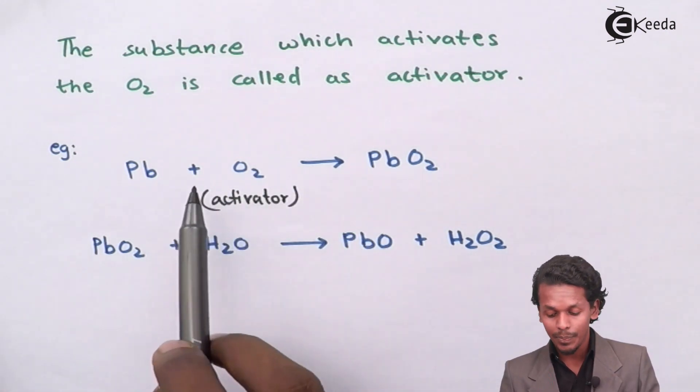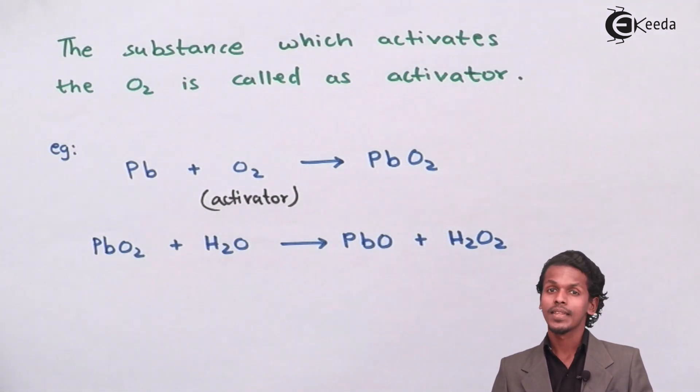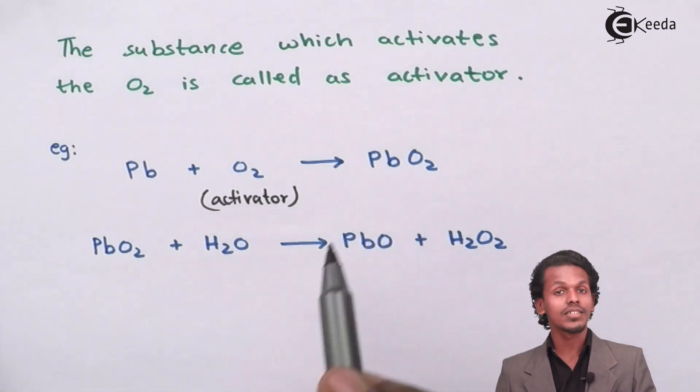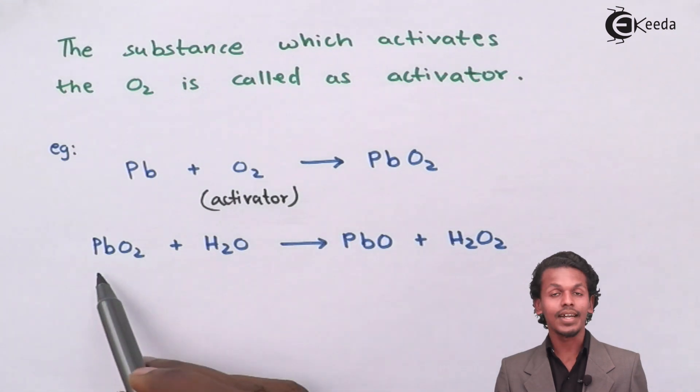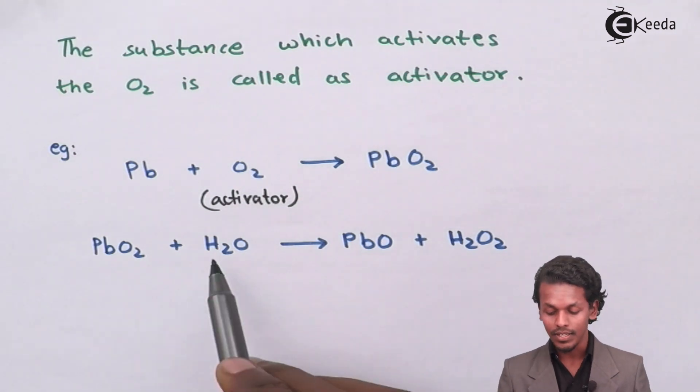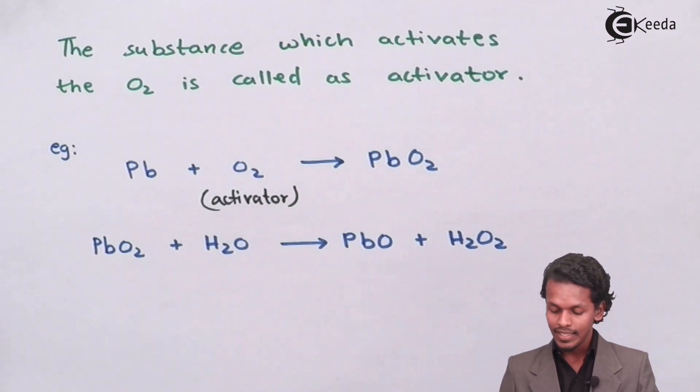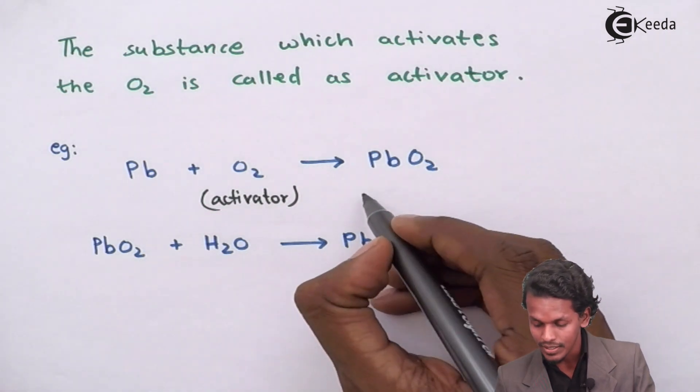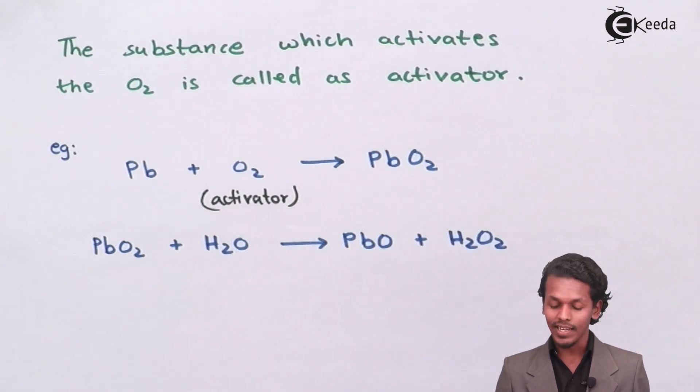It activates the Pb to form PbO2 and this PbO2 that is now been converted can be reacted with water molecule and in this case this PbO2 which is used or which is acting like an auto-oxidator.